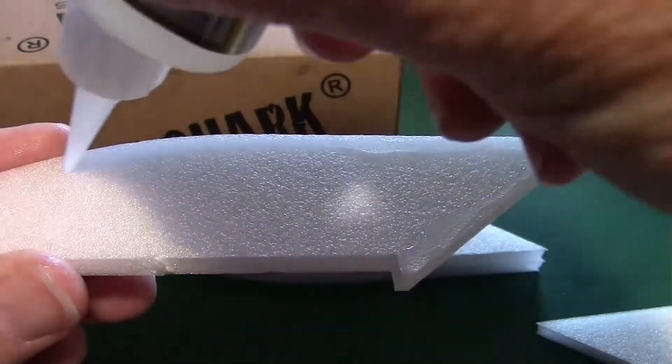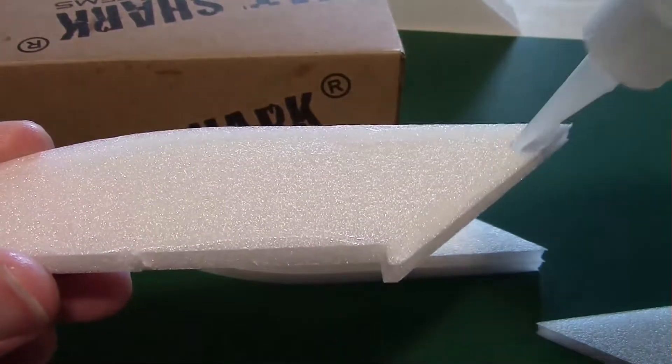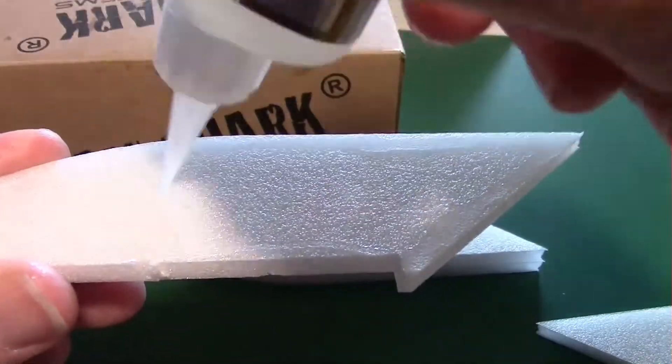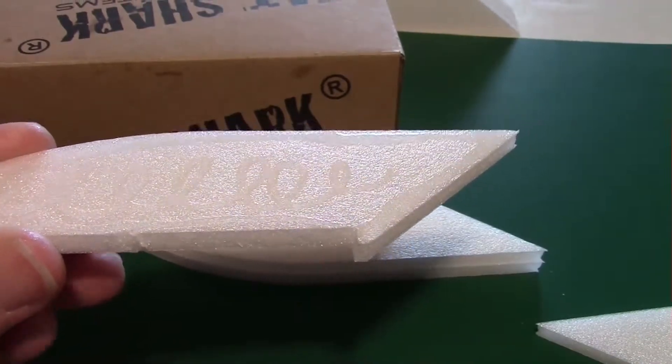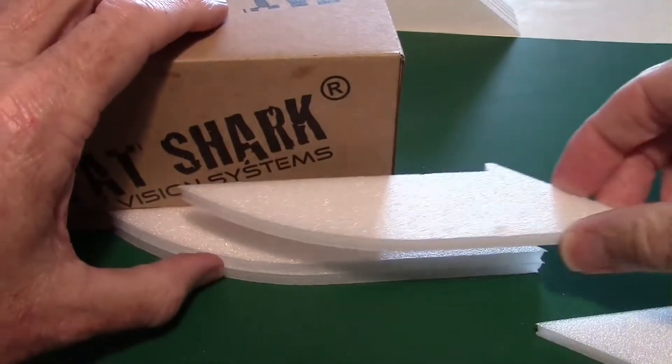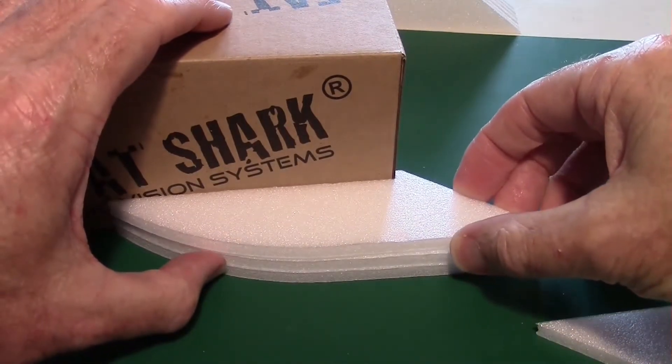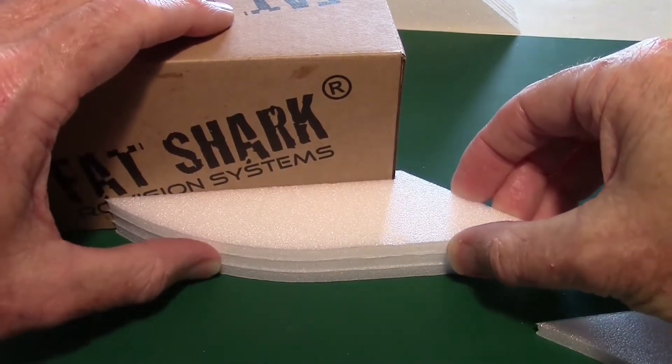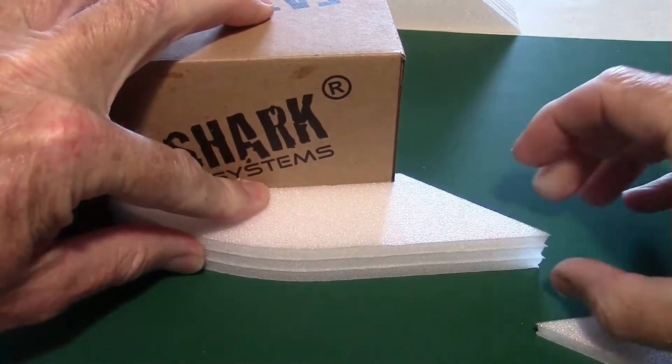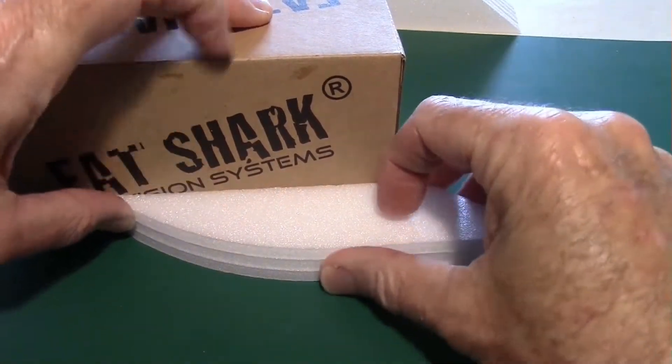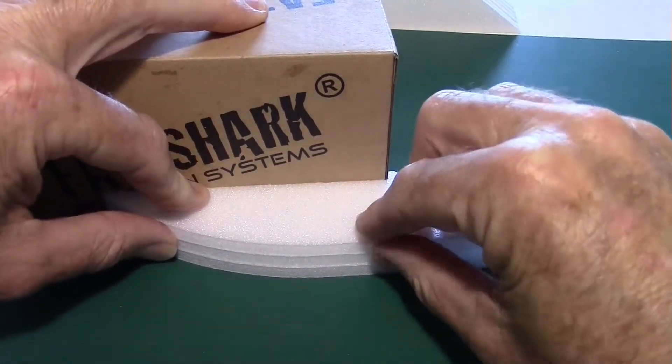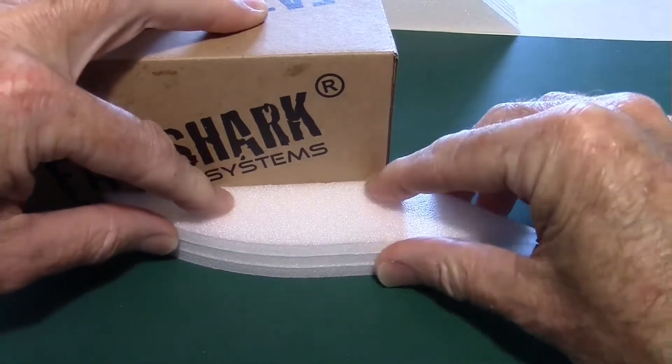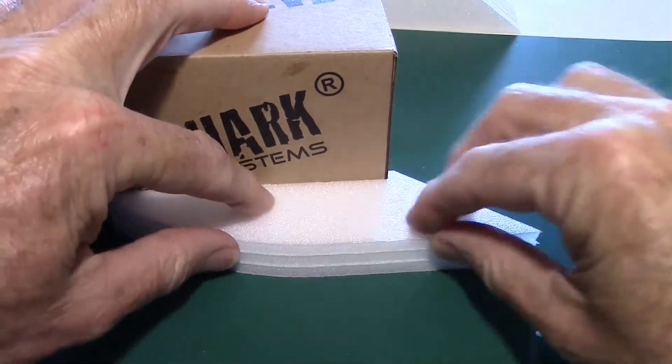Going around the edge seals it off to make sure no water gets in there, and then a little in the middle for strength. You could use other kinds of glue, spray glue, as long as it doesn't dissolve Depron. We'll just keep repeating that for all six pieces, and then we'll be done.